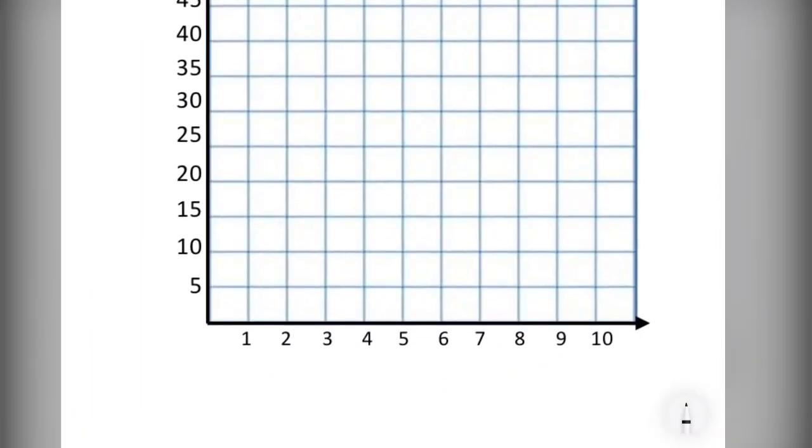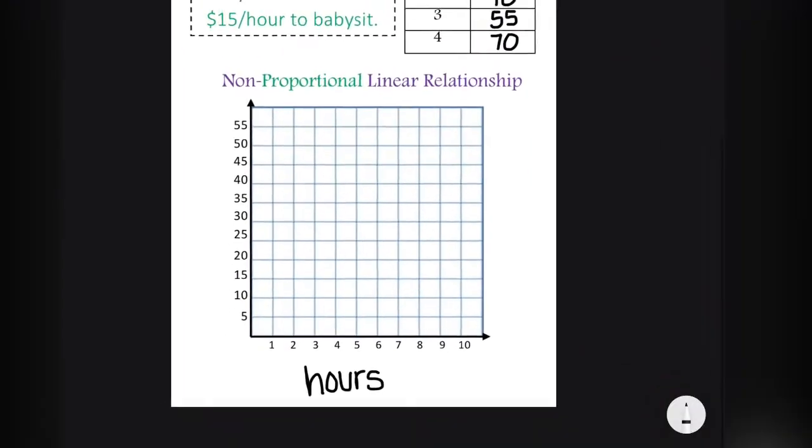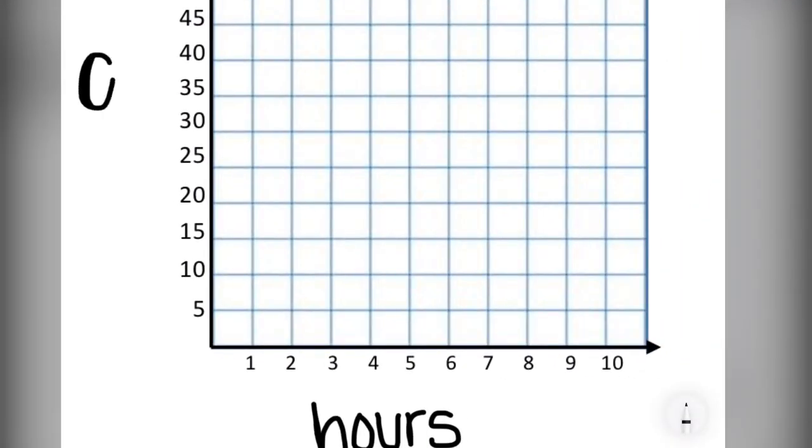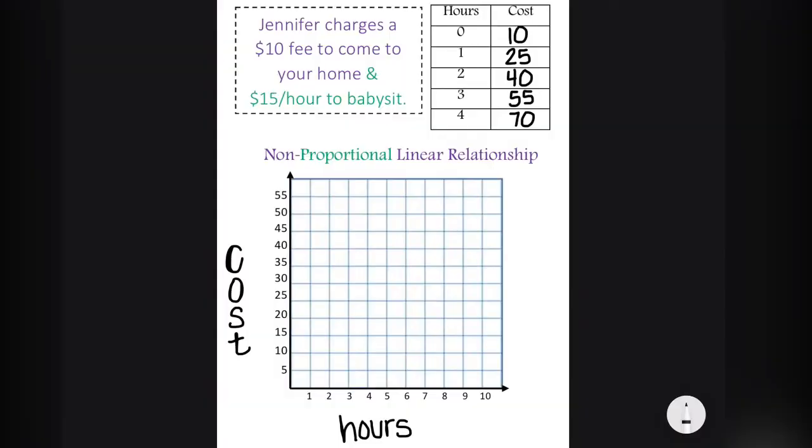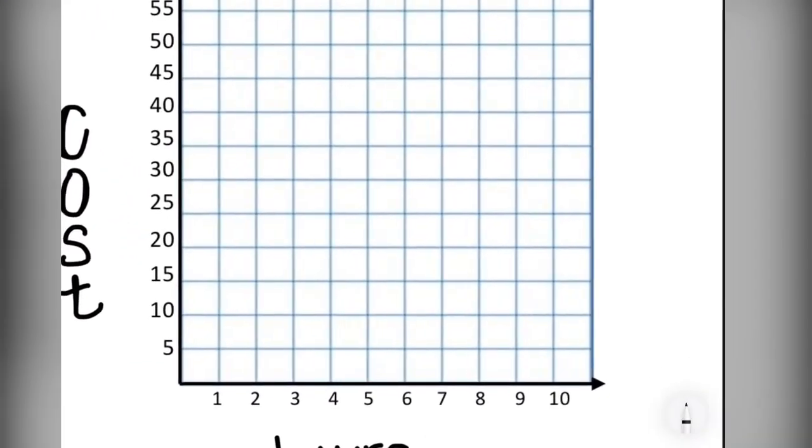We can again graph the situation. Remember, the x-axis is the number of hours she works. And the y-axis will be the cost, or the fee she will charge. This time, we will not start at zero, zero. Because at zero, Jennifer is charging $10.